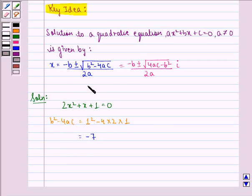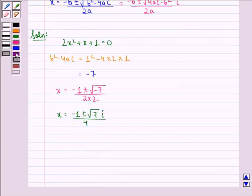Therefore, from the key idea we see x = (-1 ± √(-7))/(2·2). This equals x = (-1 ± √7i)/4. Therefore, our solution to this question is (-1 ± √7i)/4.